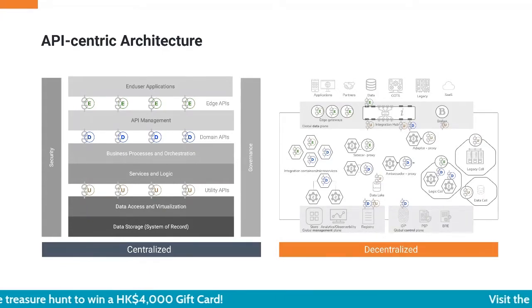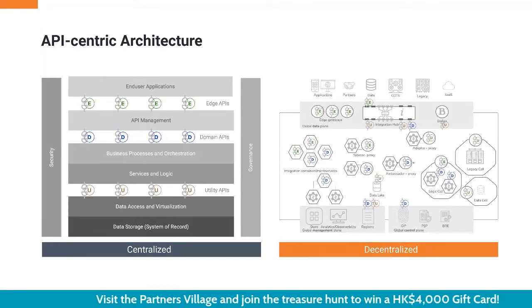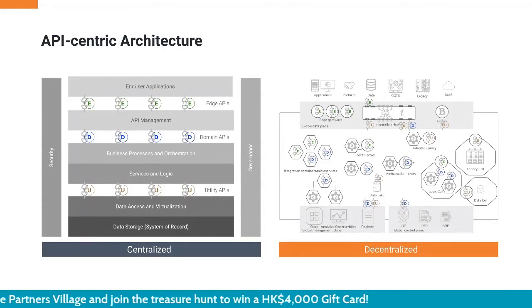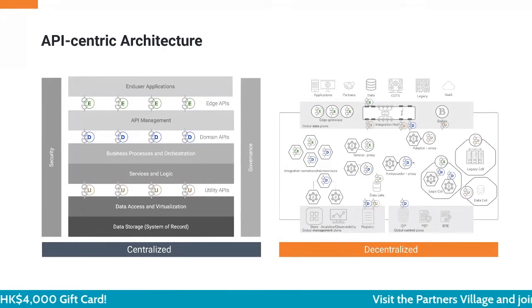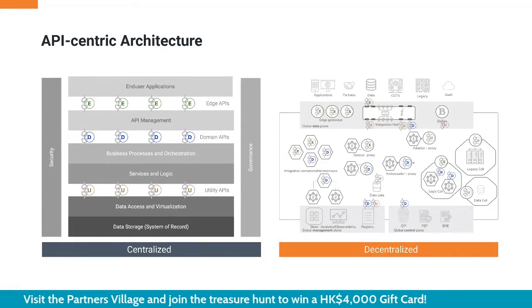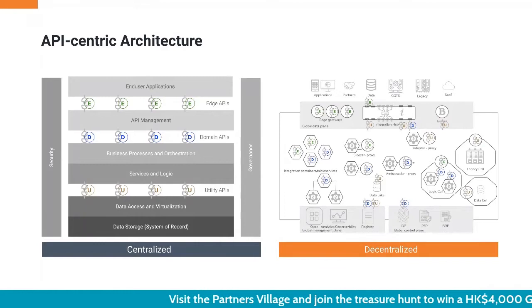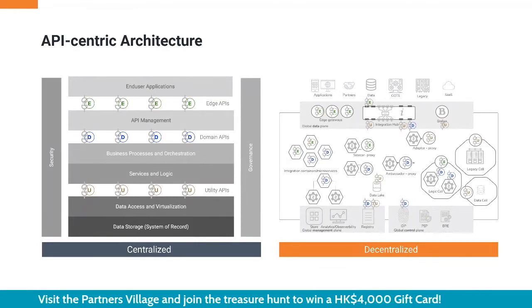People using decentralized, microservices-friendly architecture are still exposing capabilities using microservices and APIs and building applications on top of that. The common thing between both architecture styles is that APIs are the glue connecting different types of business capabilities, allowing application developers to build applications that run on mobile, web browsers, or edge IoT devices.